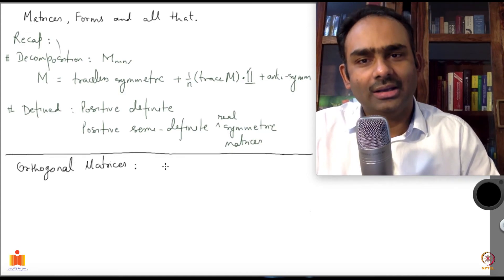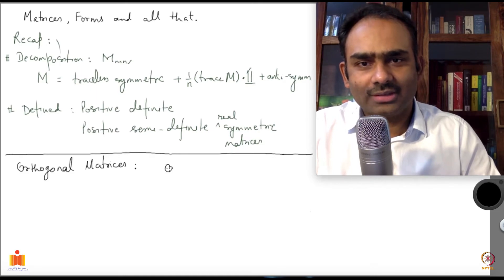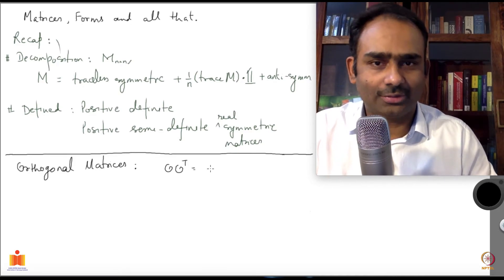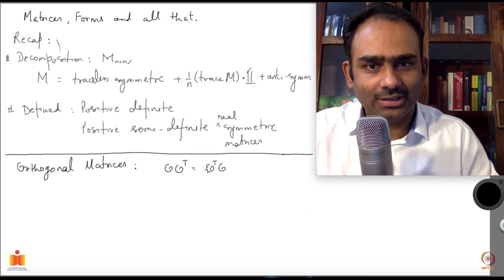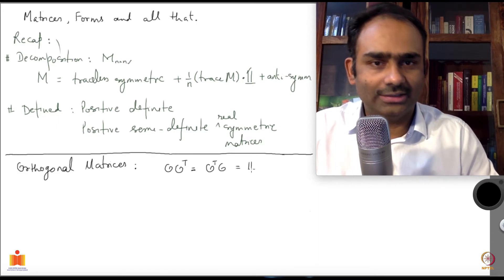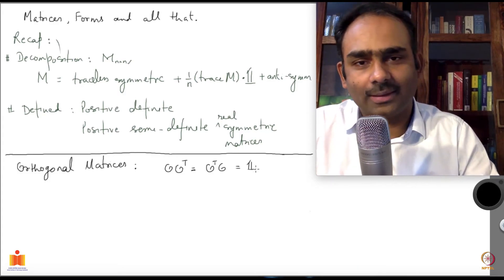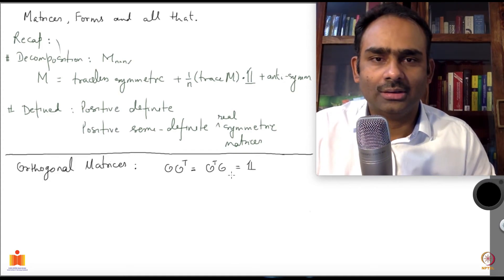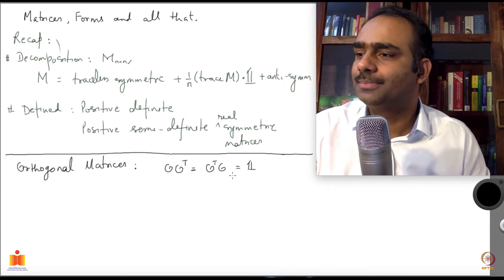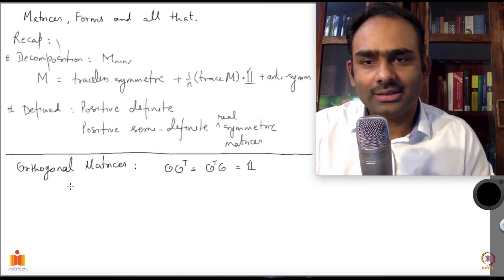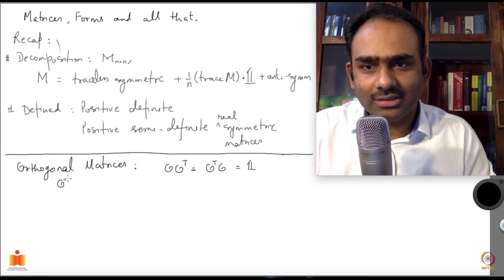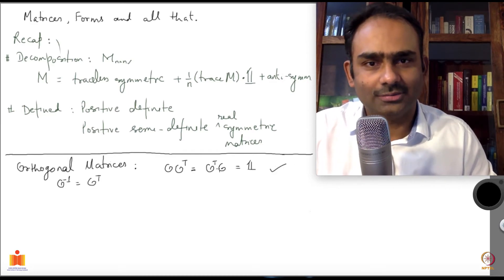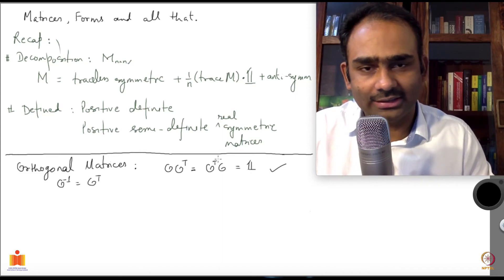What is an orthogonal matrix? A matrix O is called orthogonal if you take the transpose of it and multiply with it — either from the right or from the left, in whatever order — you get identity. That is the definition of an orthogonal matrix. This means that the inverse of O is the same as O transpose, because when you take O multiplied by O inverse you should get identity.